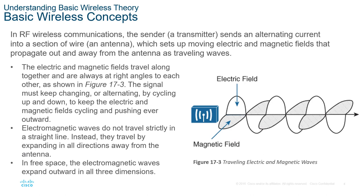The signal must keep changing or alternating by cycling up and down to keep the electric and magnetic fields cycling and pushing outward. Electromagnetic waves do not travel strictly in a straight line; instead they expand in all directions away from the antenna. In free space, electromagnetic waves expand outward in all three dimensions. Even though we often look at a two-dimensional chart, we have to understand that the wave is transmitted and grows in all directions.